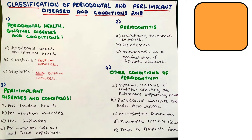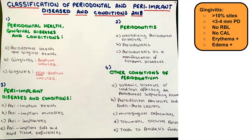Here are the handwritten notes beginning with the overall classification of periodontal and peri-implant diseases and conditions. Before we get into the green headings, I want to cover the gingivitis aspect. For more than 10% of sites in the oral cavity, we want to have less than 3 to 4 millimeters of pocket depth. There should be no radiographic bone loss (RBL) and no clinical attachment loss (CAL). There could be erythema positive and edema positive as signs of gingivitis. Anything above this — more than 4 mm pocket depth, positive RBL, positive CAL — is classified under periodontitis.